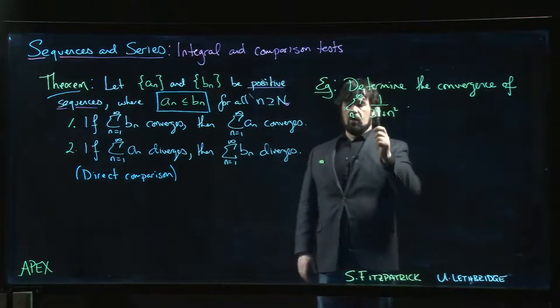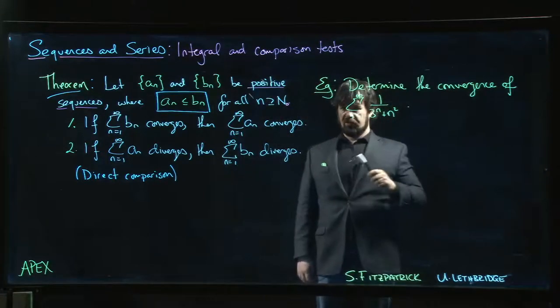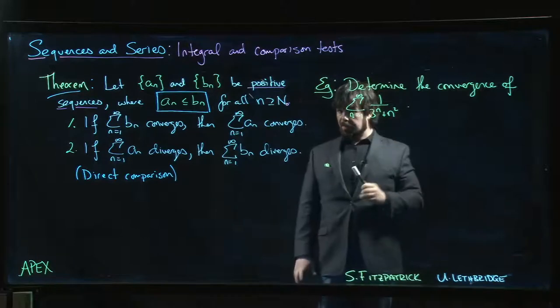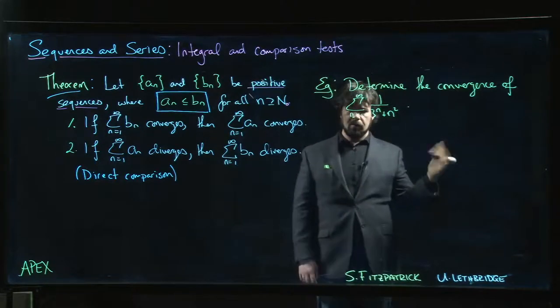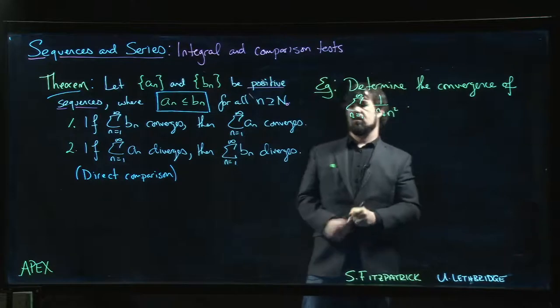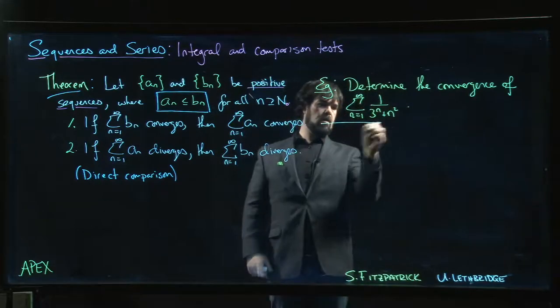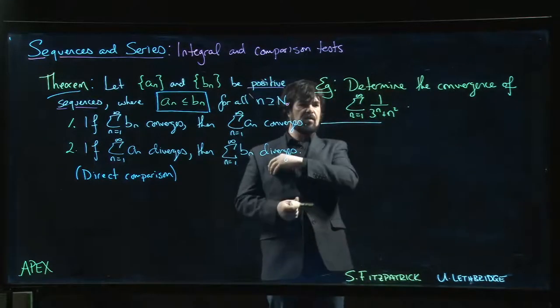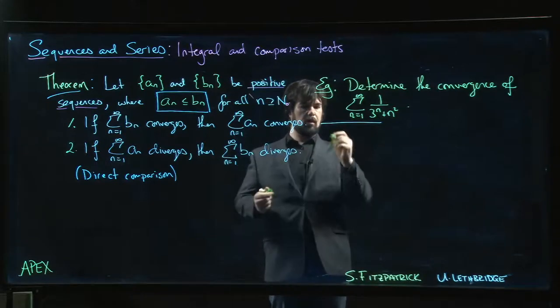You might say, I know something about geometric series and when they converge, I also know something about p-series and when they converge. Here we seem to have the two of them sort of jumbled together. Well, what do you do? There's actually kind of two ways you could do this. You could say, well, here's one option.